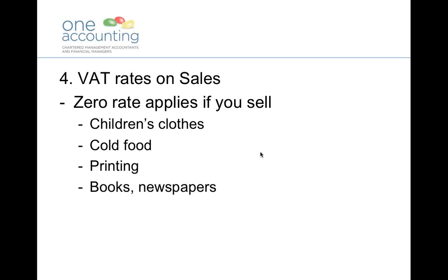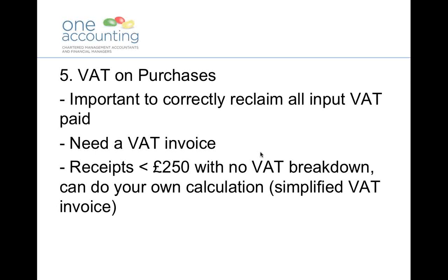There's a separate VAT rate called the zero rate, which applies to a small range of goods. If you're selling children's clothes — designed to fit someone under the age of 14 — they're classified as children's clothes and zero rated. Cold foods: if you're running a sandwich bar, any fresh sandwiches sold over the counter will be zero rated. If you're in the business of supplying print, the majority of print — books, newspapers, flyers — would be zero rated as well.